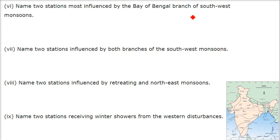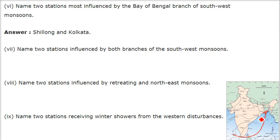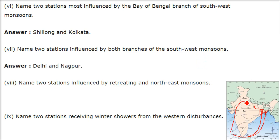Name two stations most influenced by the Bay of Bengal branch of the South West Monsoon. The monsoon enters from the Hubli–Kolkata area, so the answer is Kolkata and Shillong. Name two stations influenced by both branches of the South West Monsoon — the answer is Delhi and Nagpur.